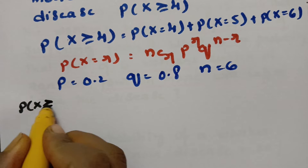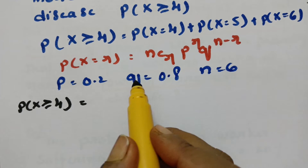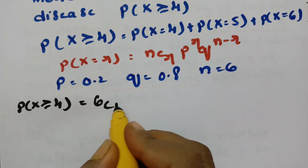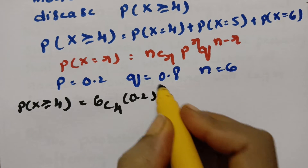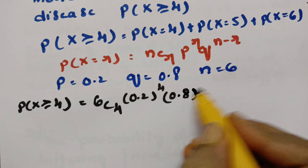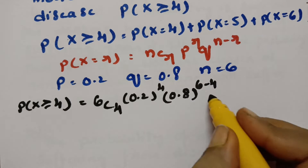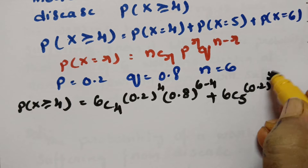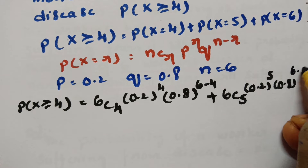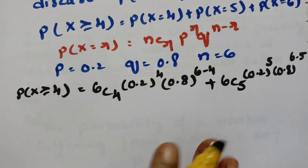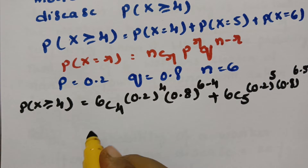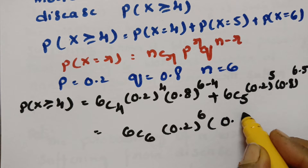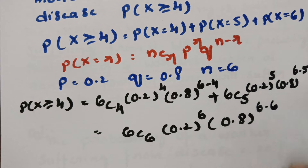So P(X ≥ 4) = 6C4 × p^4 × q^(6−4) + 6C5 × p^5 × q^(6−5) + 6C6 × p^6 × q^(6−6). That gives us three terms with r = 4, r = 5, and r = 6.